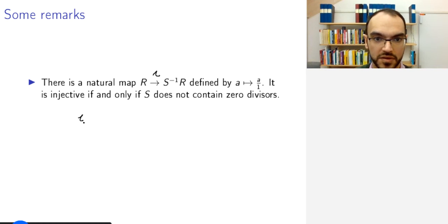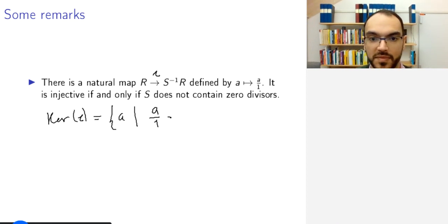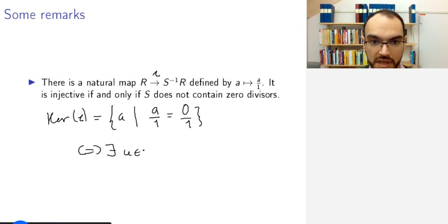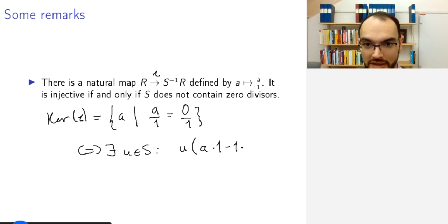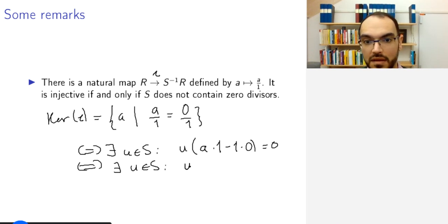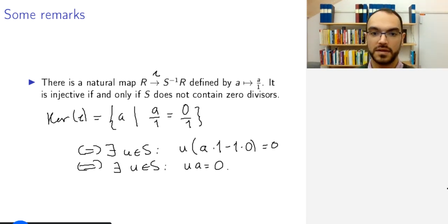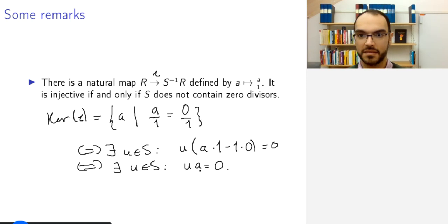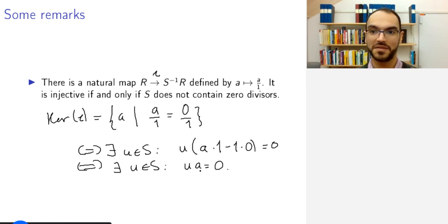What is the kernel of this map? It is the set of all A such that A maps to zero, which means there exists U in S such that U times A equals zero. So if U is a zero divisor, then for some non-zero A this will be possible. Note that the fact that S contains zero divisors is not the same as S containing zero, even though S is multiplicatively closed — think about why this is the case.